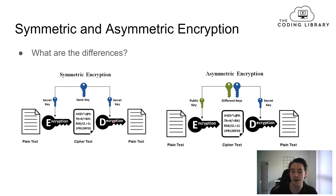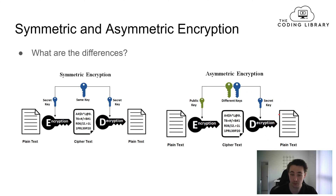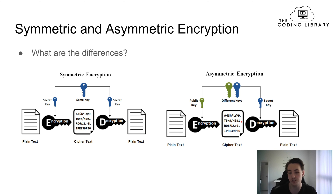In asymmetric encryption we have a public key and a secret key. The sender uses a public key to do the encryption and saves this public key. The receiver then uses its secret key to do the decryption. We send the secret key to our receiver, so we have this public key and secret key pair that are used to do the encryption and decryption of the information transferred from sender to receiver.